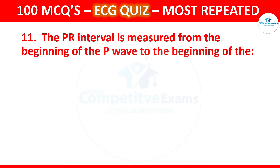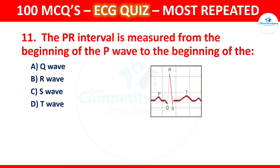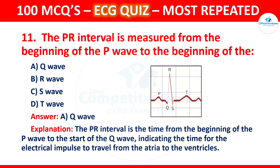Question 11: The PR interval is measured from the beginning of the P wave to the beginning of which wave? Options are Q wave, R wave, S wave, or T wave. The correct answer is Q wave. The PR interval is the time from the beginning of the P wave to the start of the Q wave, indicating the time for the electrical impulse to travel from the atria to the ventricles.